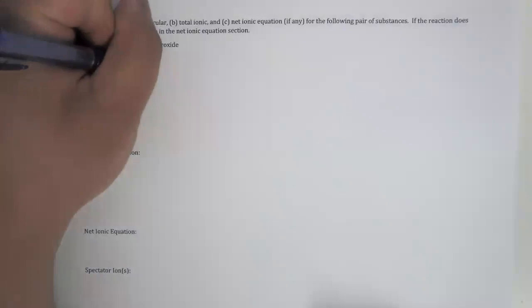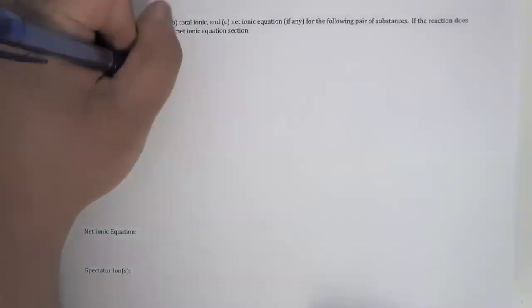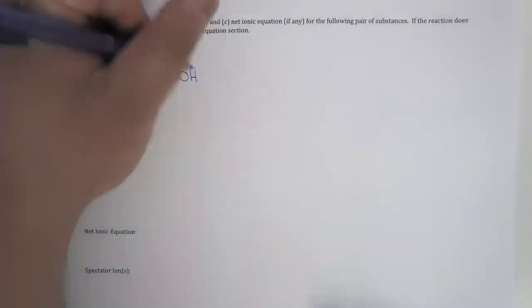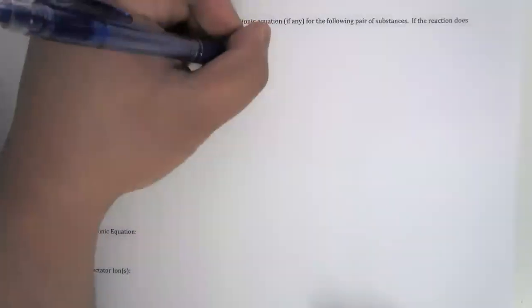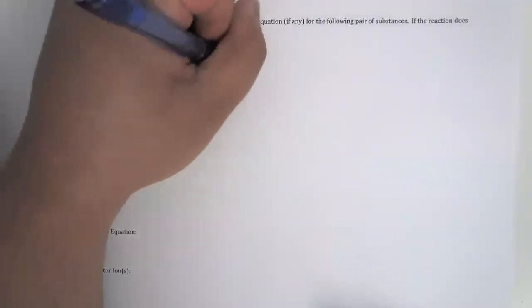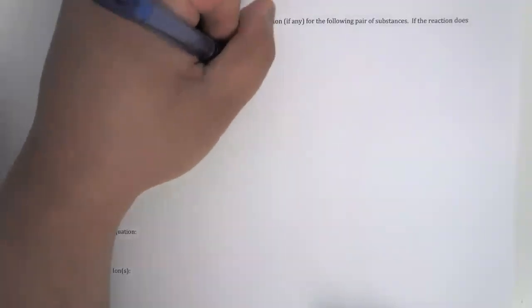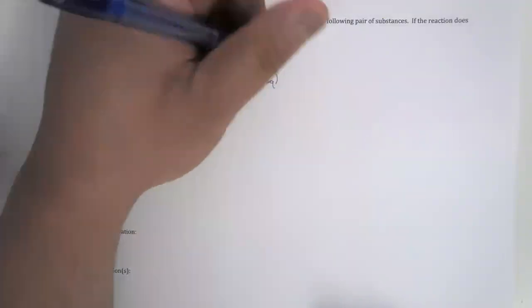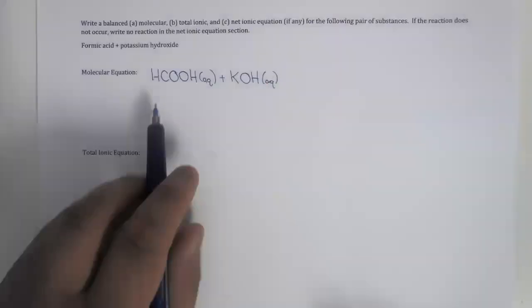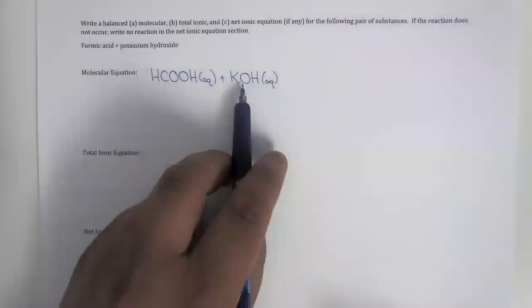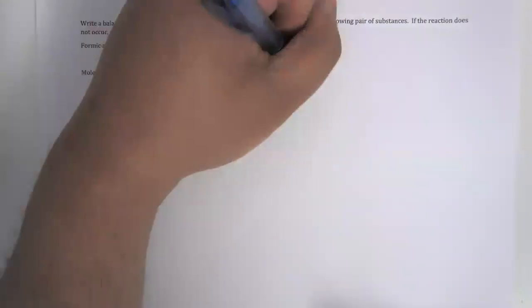The molecular equation is when HCOOH, or formic acid, mixes with KOH, in which the hydrogen ion from formic acid transfers to bond with the oxygen atom in the hydroxide ion to form water.